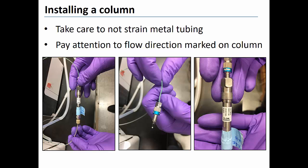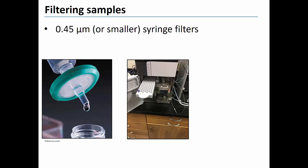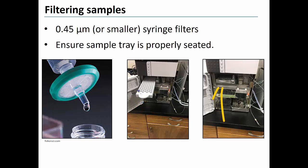Care should be taken to remove particles from all samples analyzed by HPLC. Particles can clog and damage the instrument's components. The best way to minimize damage due to particles is to pass all samples through a syringe filter with a pore size of 0.45 microns or less. After loading samples in the auto sampler tray, be sure the tray is seated properly in the instrument. If the tray is not properly seated, the instrument will not permit you to start an analysis.